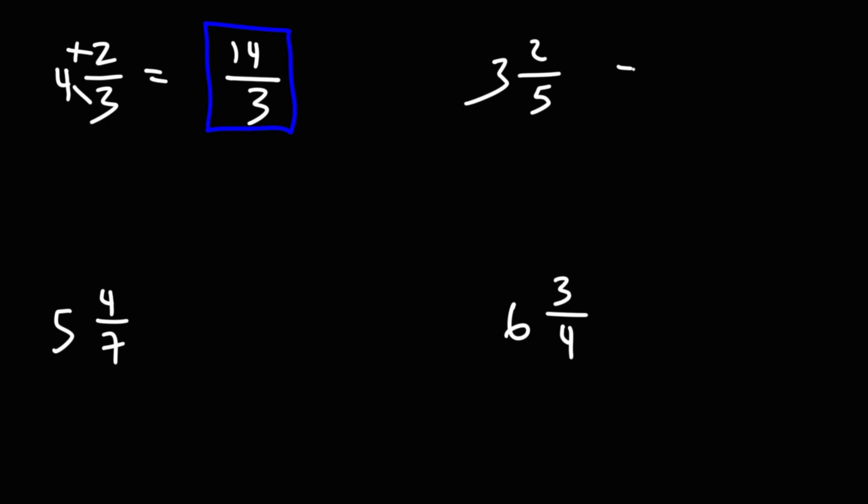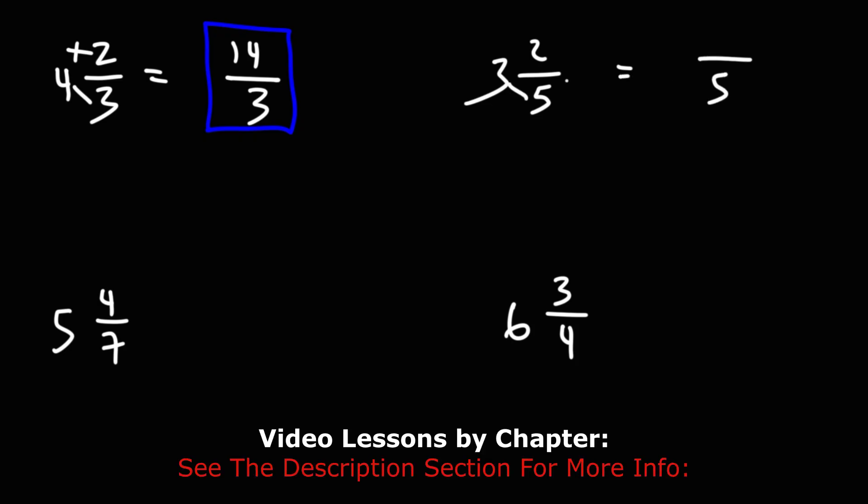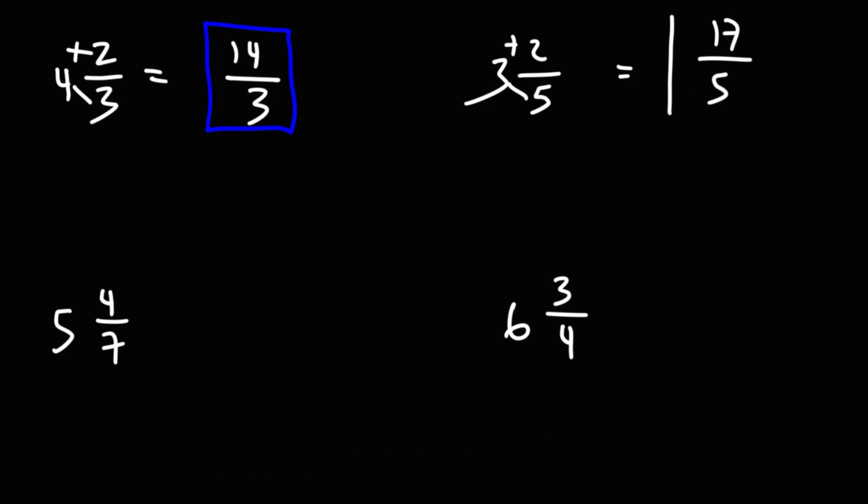For the next one, we want to rewrite the denominator. We're going to multiply 3 and 5, which is 15, add 2, that's 17. So it's 17 over 5 for the second example.